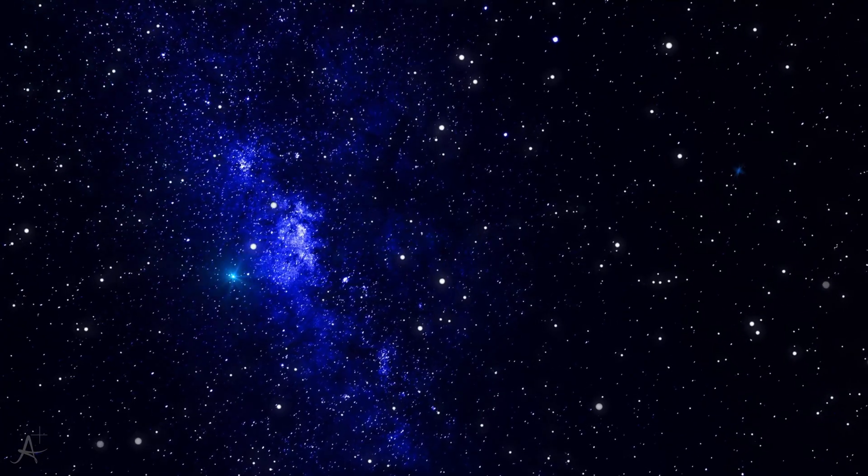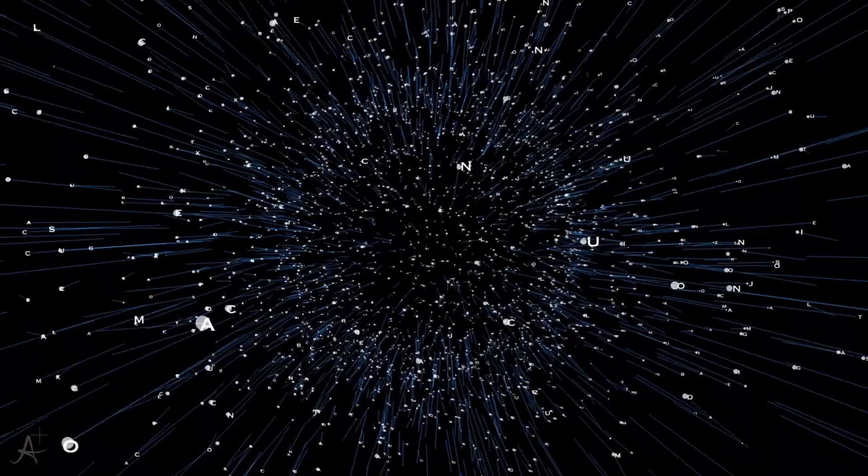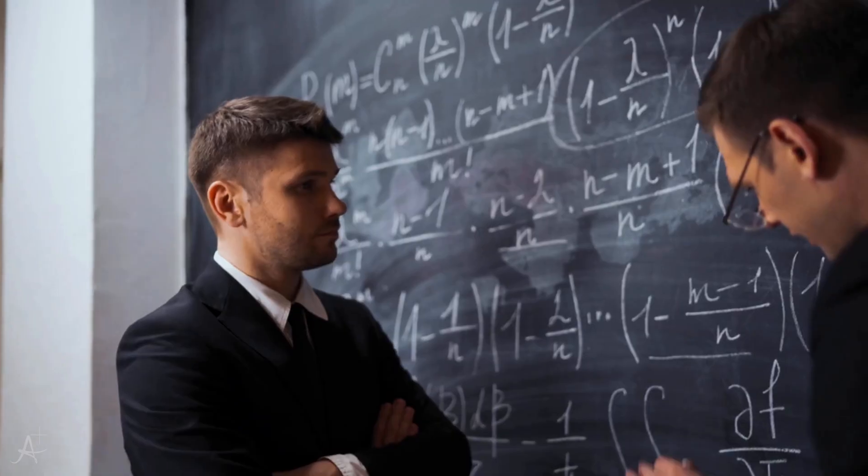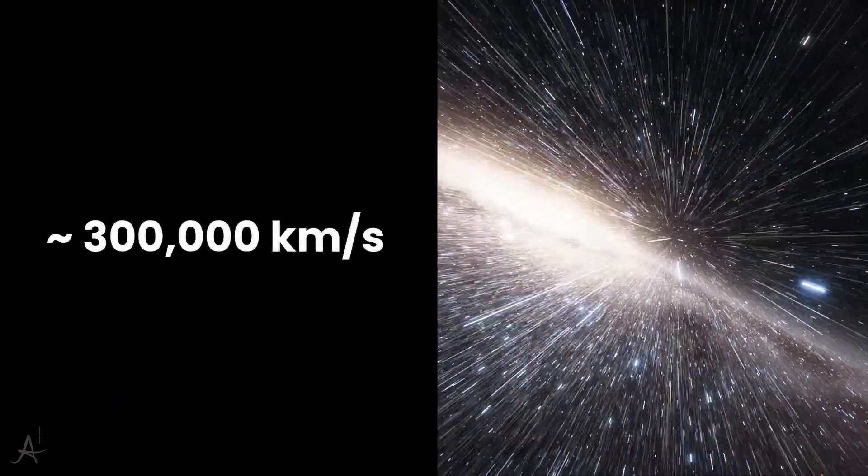Ever since humans first looked up at the stars, we've been obsessed with one idea: speed. The faster we move, the farther we can go, and the more of the universe we can explore. But there's one ultimate limit, one cosmic speed barrier that seems impossible to break. The speed of light: 300,000 kilometers per second.